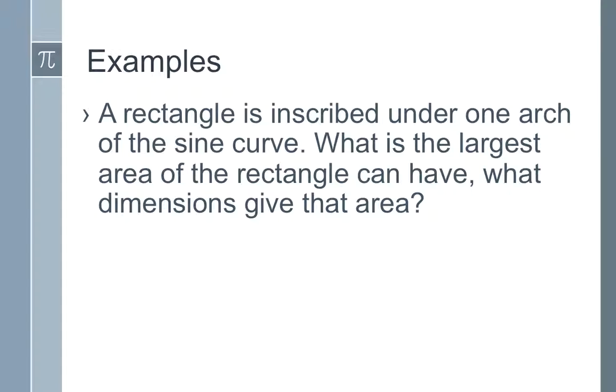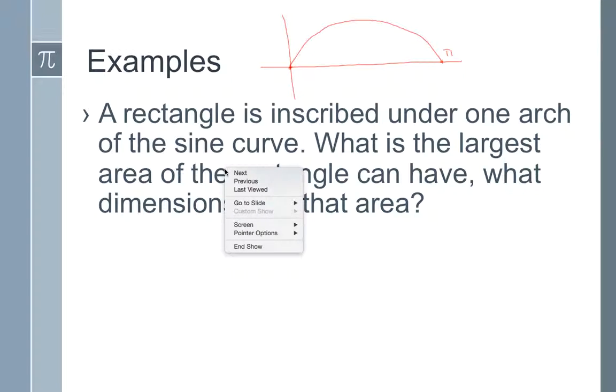That one was kind of an easy problem. What about ones that are a little bit harder? If you were to look at a rectangle inscribed, that means underneath, inscribed underneath one arch of the sine curve. If we looked at the first arch of the sine curve, that goes from 0 to pi. If we were to look at a rectangle underneath, inscribed meaning the corners hit, we would need to figure some stuff out about this particular rectangle.